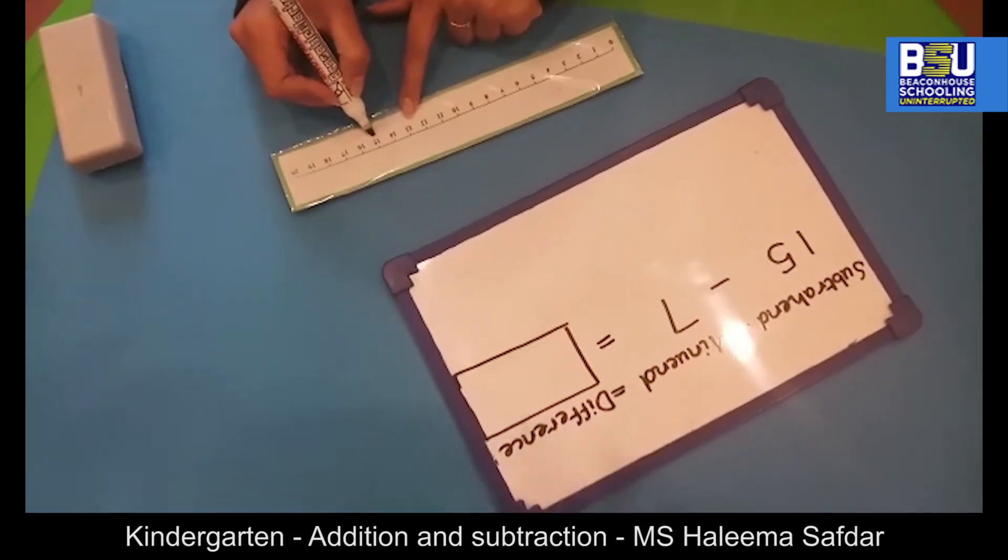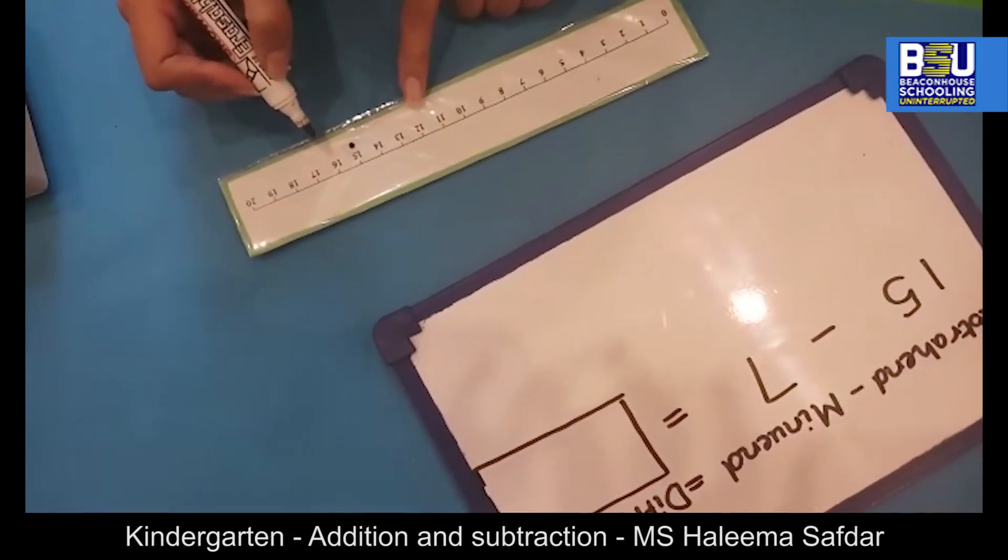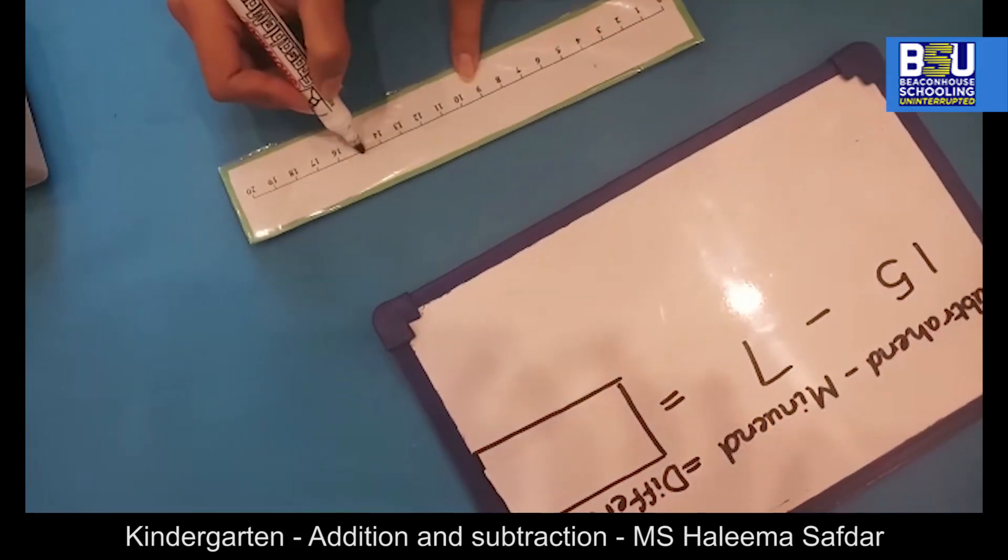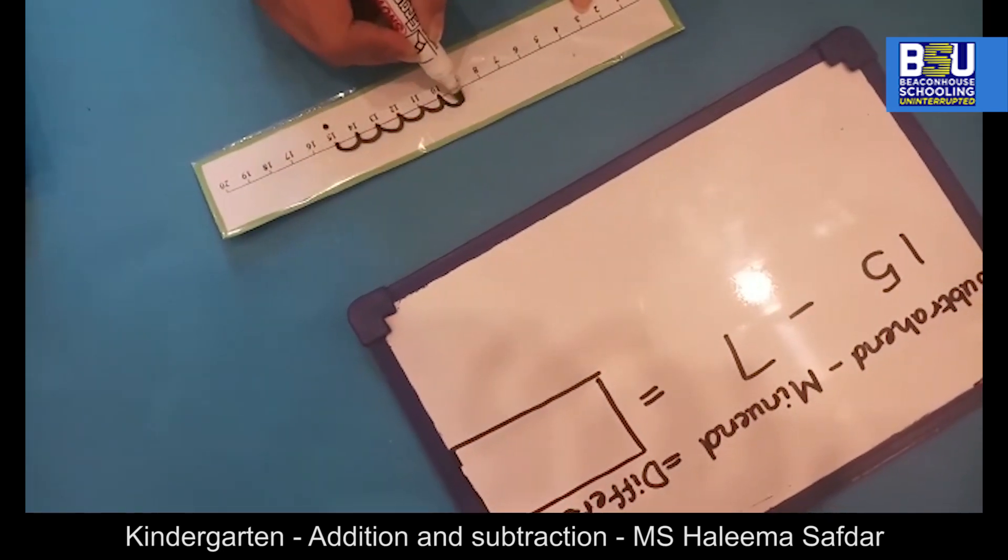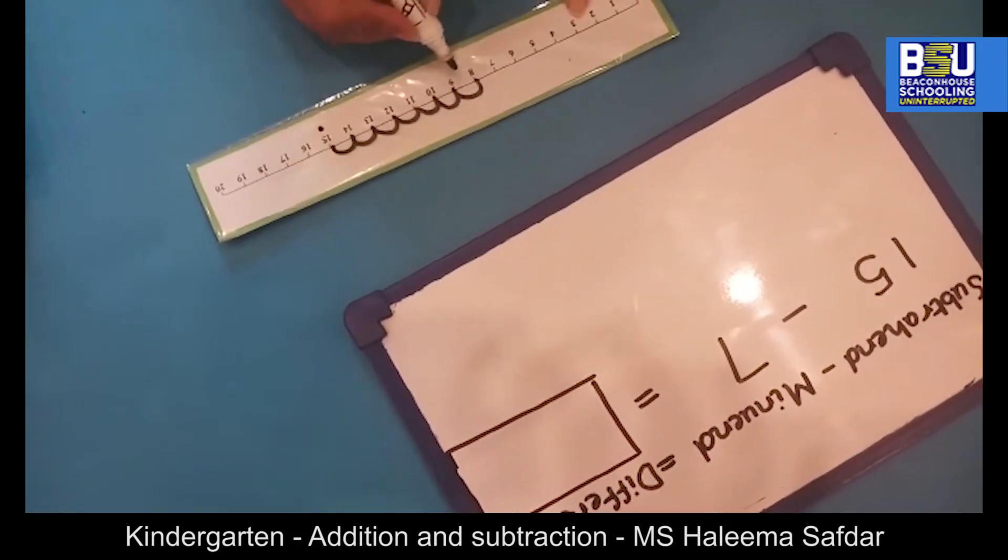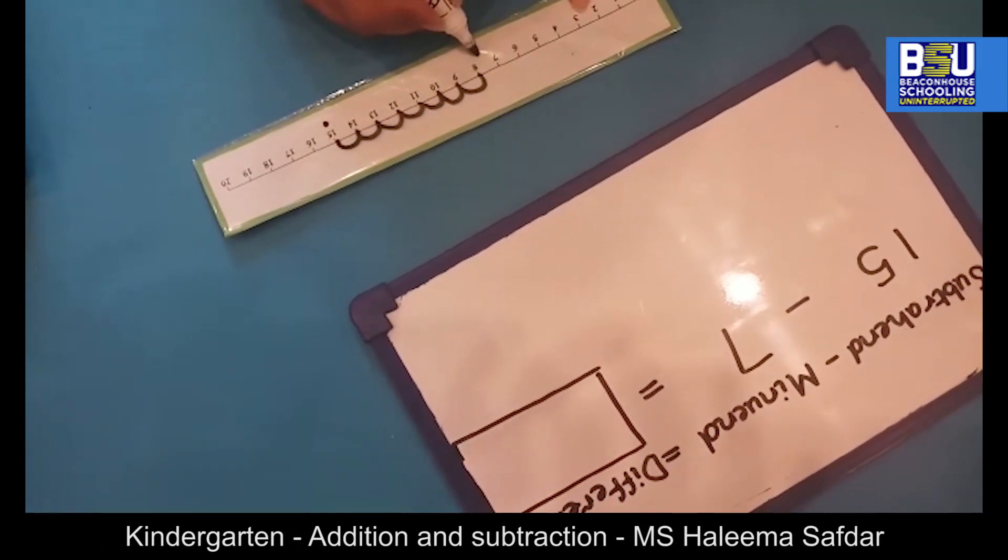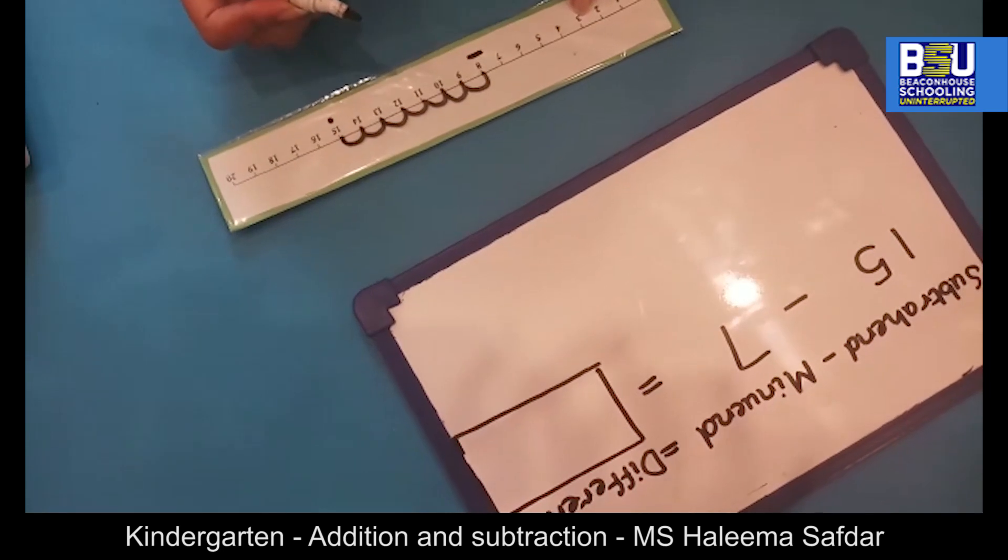So we will begin with number 15 and take 7 jumps backwards: 1, 2, 3, 4, 5, 6, 7, and the number on which we land will be the difference of both numbers.